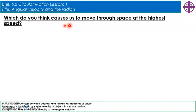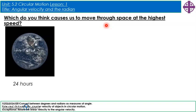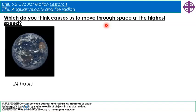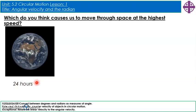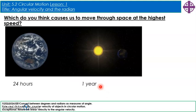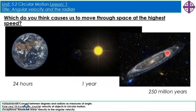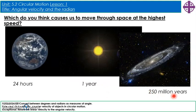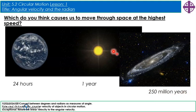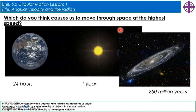First, a few images to consider. Which of the following causes us to move through space at the highest speed? Is it our rotation on the surface of the earth, which takes 24 hours for one full rotation? Our orbit of the Sun, which takes a year? Or our orbit of the centre of the galaxy, which takes 250 million years?